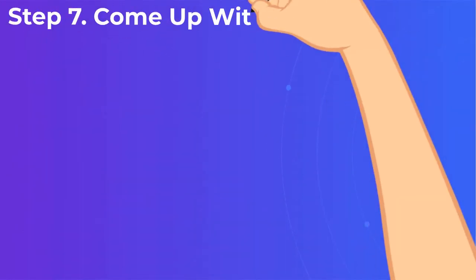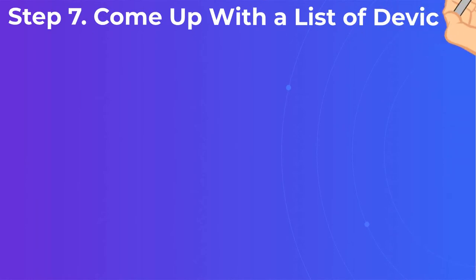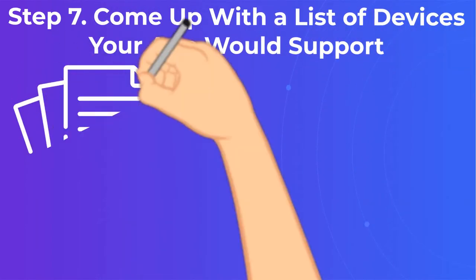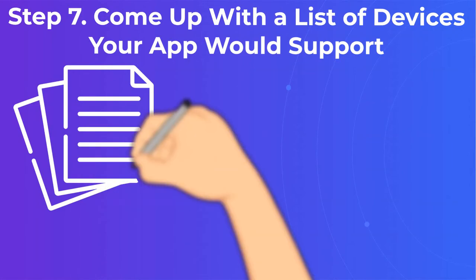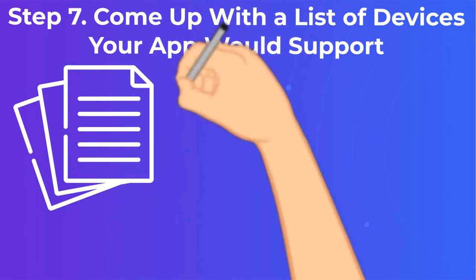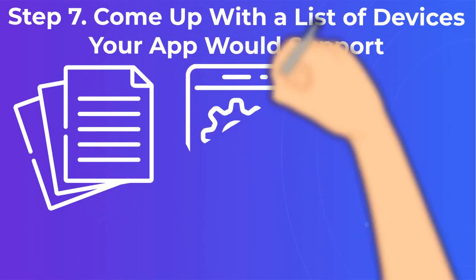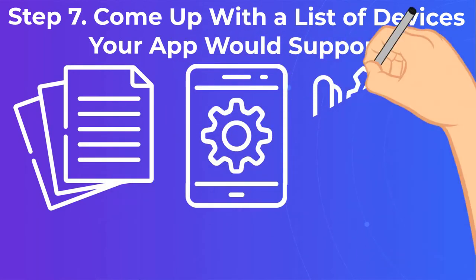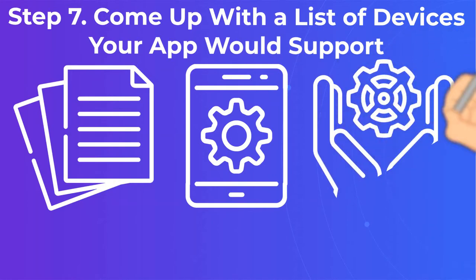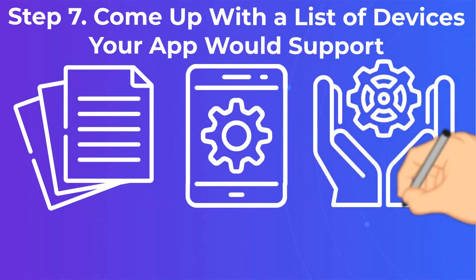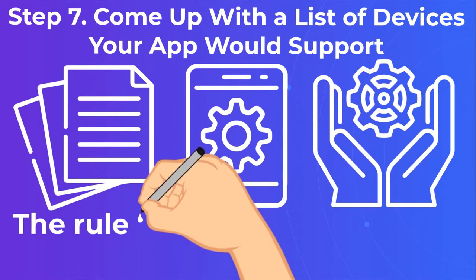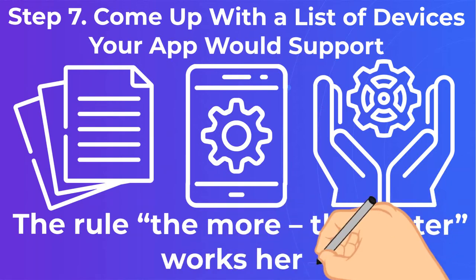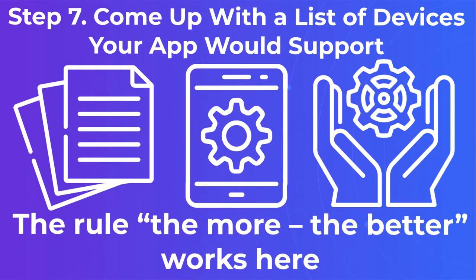Step 7: Come up with a list of devices your app would support. The rule 'the more, the better' works here. The more devices your application can support, the more freedom of choice you give to the user. Supporting only one manufacturer is not the best option, as it significantly limits the capabilities of your application.